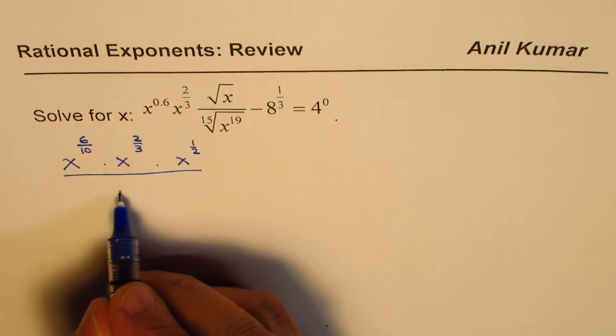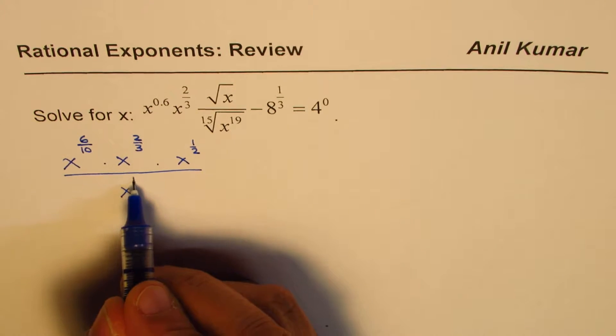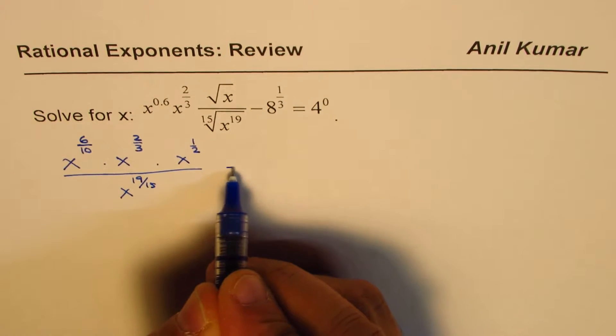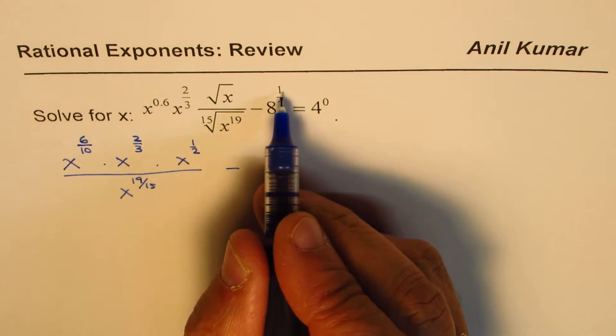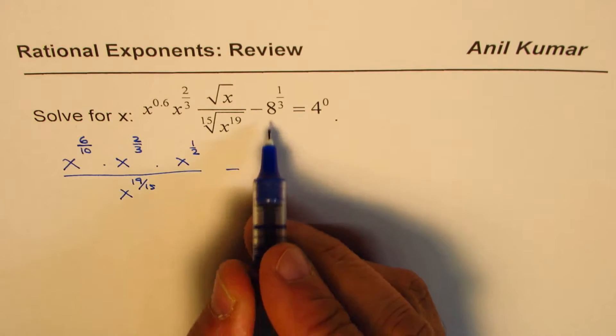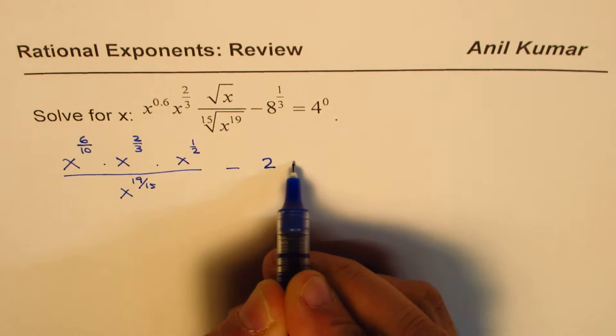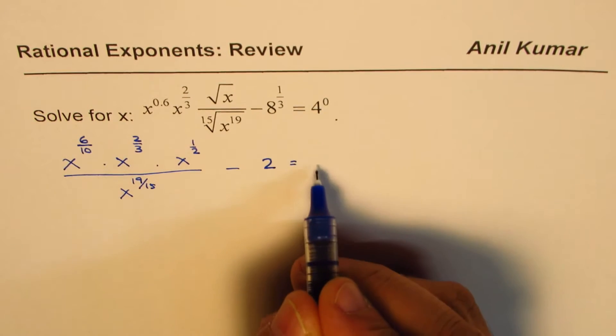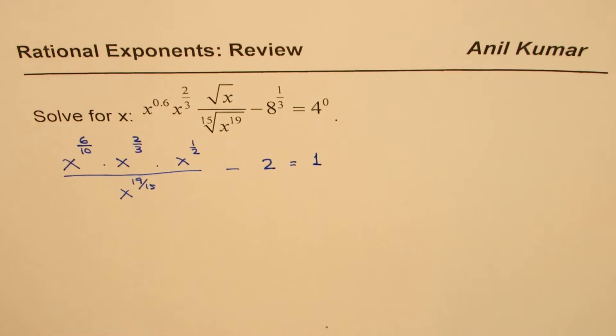Let's write this as x^(19/15), minus... This is cube root of 8. What is cube root of 8? Cube root of 8 is 2. Anything to the power of 0 is 1. That is how we have simplified.